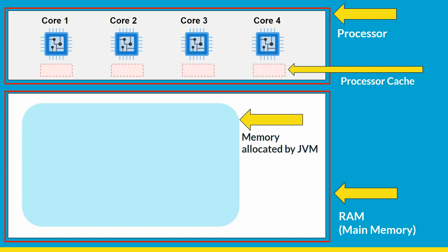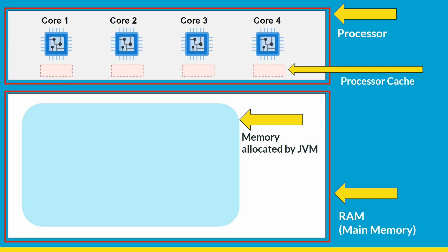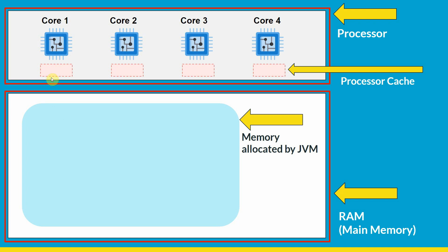There is one more important concept: processor cache. Each core has its own cache — you might have heard about L1 cache and L2 cache. Caching is used to improve performance. Say core one wants to read some value from RAM; it has to go to the RAM, read the value, do some operations, and write the value back. To avoid going back and forth to the RAM, core one will use cache and store the value locally, so next time it will just read from its cache.